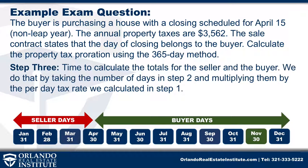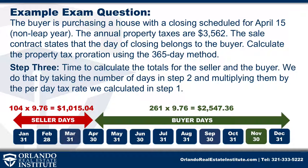The third step is to calculate the total due for the buyer and for the seller. We take the 104 seller days times $9.76 — what we found in step one — and that gets us $1,015.04. And we take 261 times $9.76, which gets us $2,547.36. That's how much the buyer is responsible for.